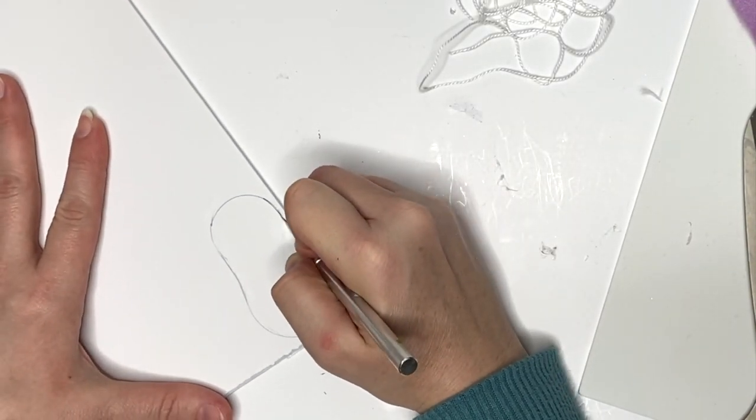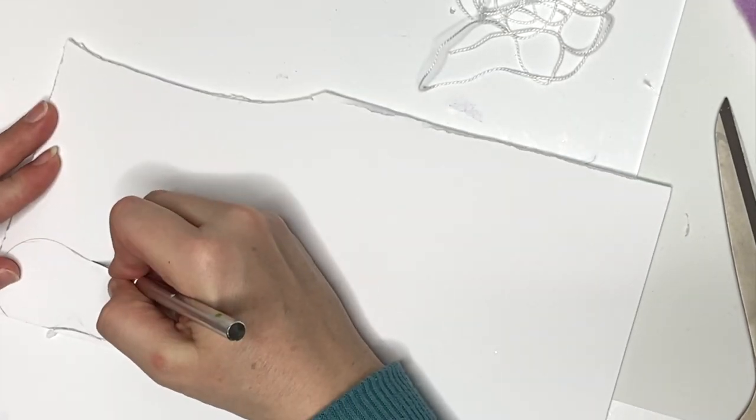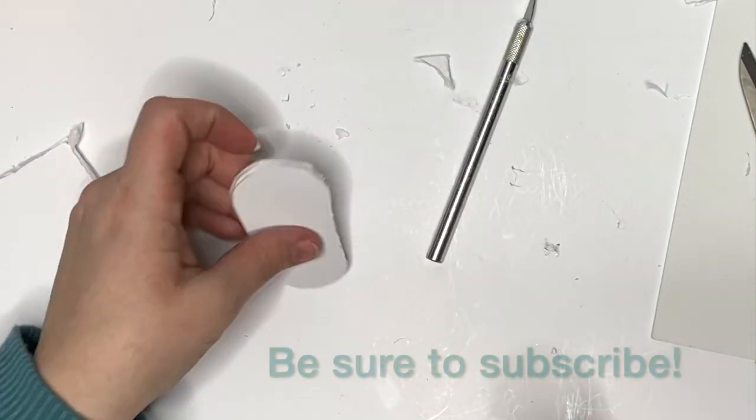So the first thing is we just trace our base pattern into that foam core using an exacto knife to cut it out. You can use scissors; it's just not as clean of a cut.